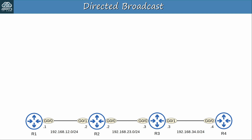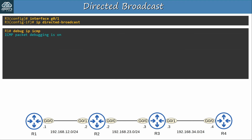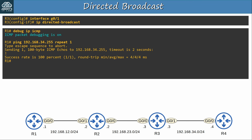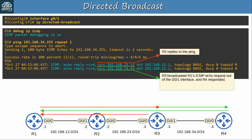Now let's see what happens when I enable directed broadcasts on R3. I used the command IP DIRECTED-BROADCAST on R3's G0/1 interface — you should enable it on the interface the message will be broadcast out of, which is R3's G0/1, connected to the 192.168.34.0/24 subnet. ICMP debugging is still enabled on R1. I pinged the broadcast address of R3 and R4's subnet again. This time I got two debug messages — two replies. One from R3, same as last time. The other reply is from R4. R3 broadcasted R1's ICMP echo request out of the G0/1 interface, and R4 responded. And if other hosts were connected to the segment, they would respond too.